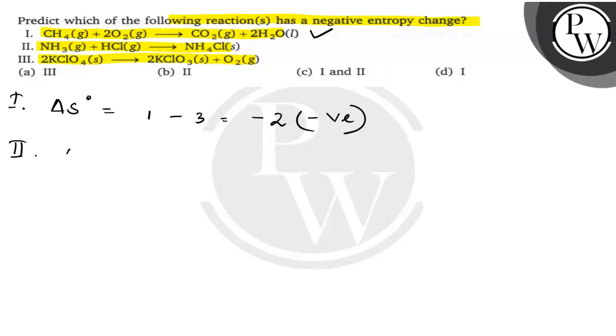Coming to reaction 2, how much Δn is here? In the product side it is 1, in the reactant side 1 plus 1 equals 2, that means minus 1, so this is also negative.